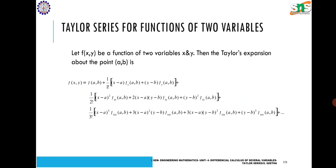Here, let f(x, y) be a function of two variables x and y. Then the Taylor expansion about the point (a, b) is defined as: f(x, y) = f(a, b) + (1/1!) × [(x − a)·f_x(a, b) + (y − b)·f_y(a, b)] + (1/2!) × [(x − a)²·f_xx(a, b) + 2(x − a)(y − b)·f_xy(a, b) + (y − b)²·f_yy(a, b)]